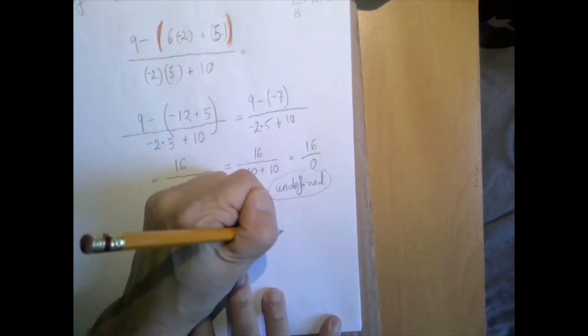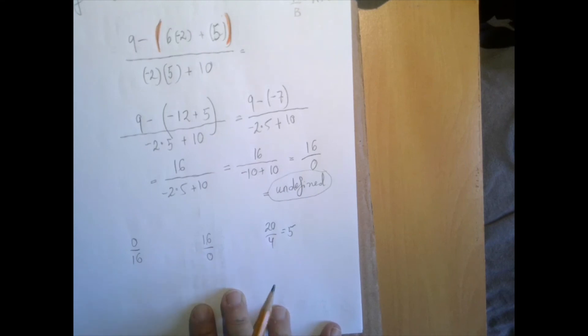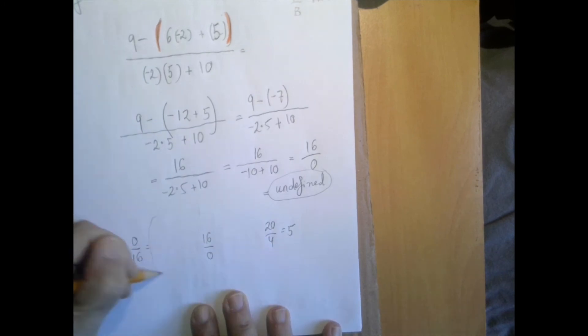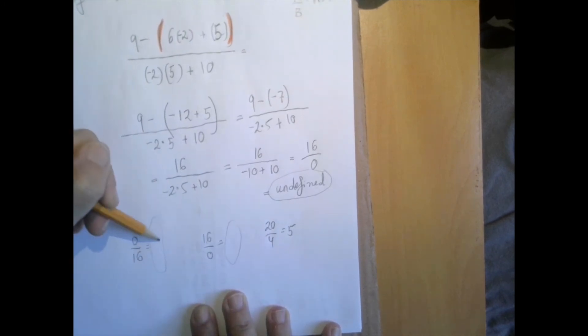Now, 20 divided by 4 is 5. Division is defined in terms of the multiplication backwards. So 20 over 4 is 5 because 4 times 5 is 20. With that in mind, 16 times what will give us back this 0? Well, 0 will work because 16 times 0 is 0.